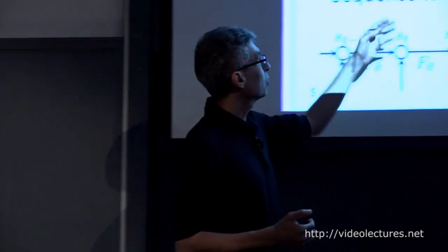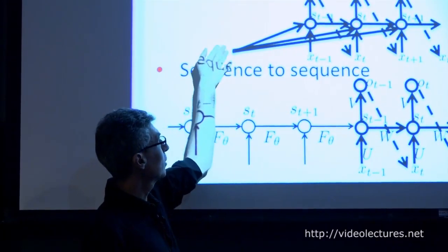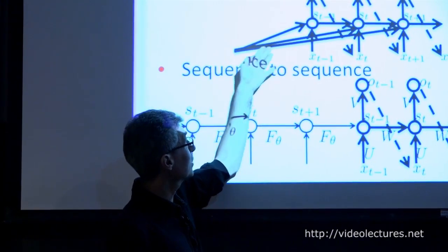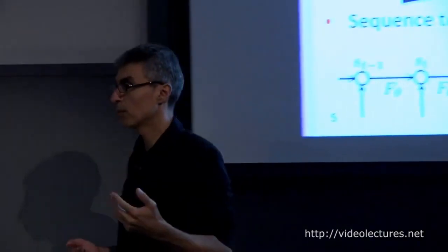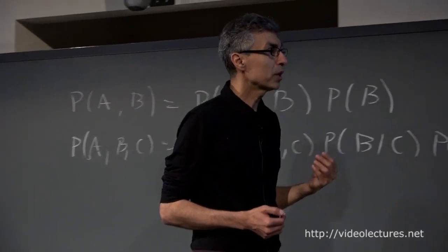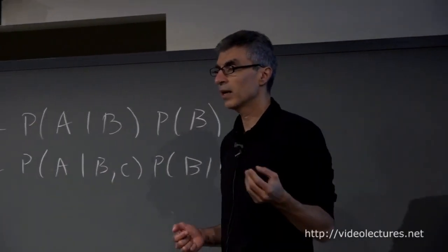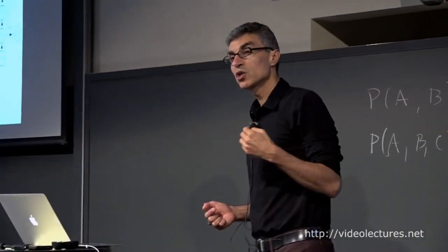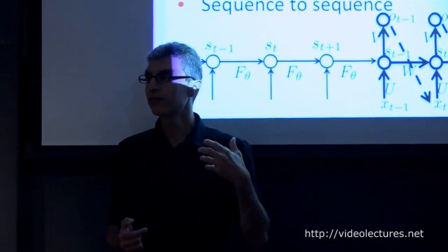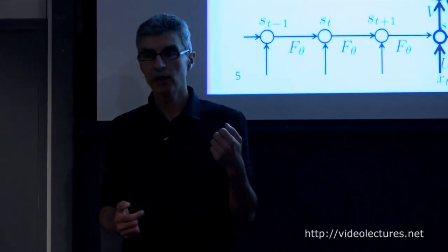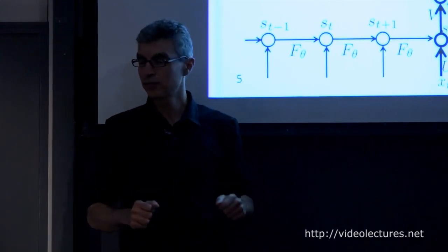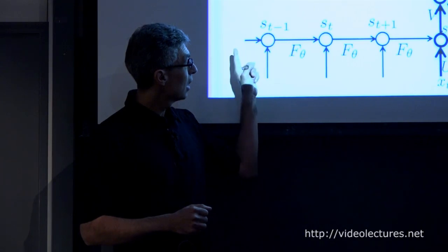We can condition on a sequence too. That's a fairly new idea dating back to around 2014 when we were trying to do machine translation. We have two recurrent nets — we called this the encoder-decoder architecture, and Google called it the sequence-to-sequence model. You take a sequence, read it, and now have a state summarizing everything you've read. A second generative recurrent net, conditioned on that state, generates the output sequence by computing the conditional probability of the output sequence given the input.